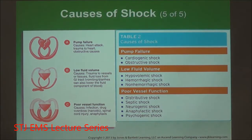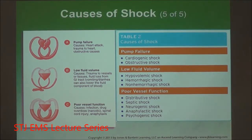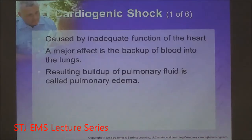The different causes of shock include: pump failure — cardiogenic or obstructive shock like tension pneumothorax or cardiac tamponade; low fluid volume — hypovolemic shock, relative or hemorrhagic; non-hemorrhagic where we're losing fluid through dehydration; and poor vessel function — distributive types: sepsis, neurogenic shock, anaphylactic, and psychogenic shock.